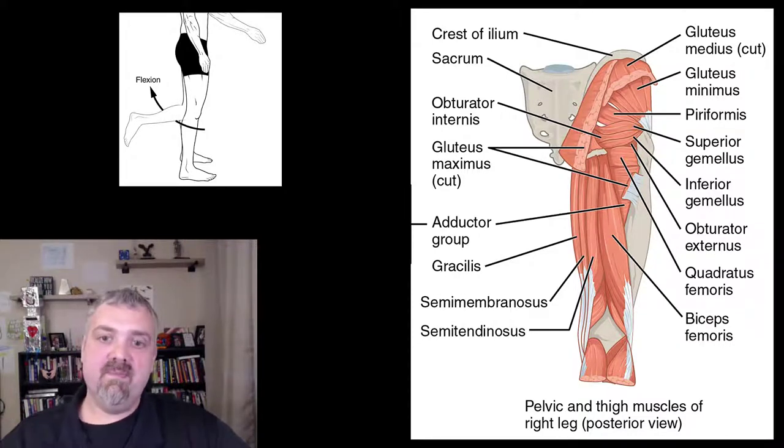And then we have the biceps femoris is the one with two heads. So biceps femoris, semitendinosus, semimembranosus. Those are the three muscles that make up the hamstrings. Then remember, BTM or bend towards me, biceps femoris is the most lateral, semitendinosus is in the middle, semimembranosus is the most medial.